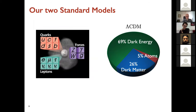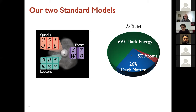Just as a brief introduction, we have our two standard models: the standard model of particle physics describing the microscopic world, and the standard model of cosmology describing the cosmos as a whole. These are extremely successful models — both work very well to describe all our observations. In the cosmological model, there is of course this postulate of dark matter and dark energy. I will focus today on the dark matter part, which is a puzzle and we don't really know what it is.